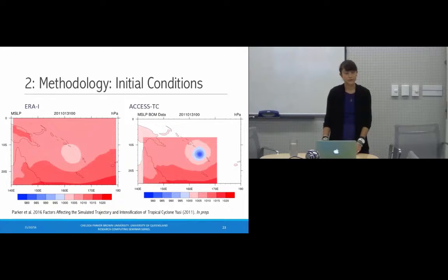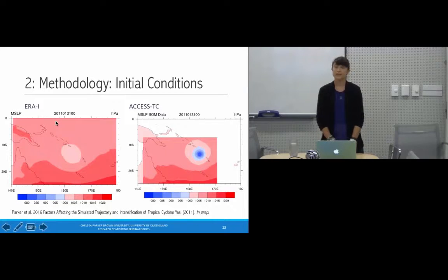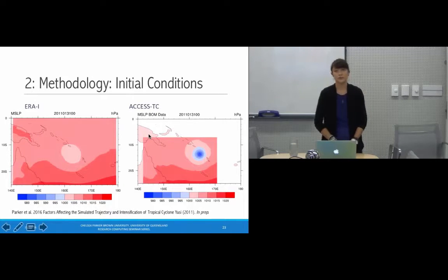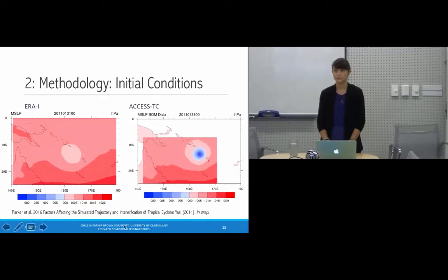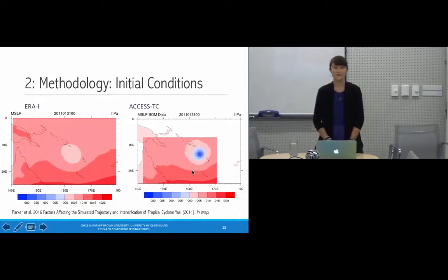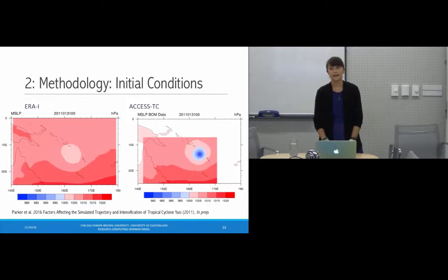Here's an illustration of the difference between those two data sets: minimum sea level pressure for both at the initialization time of Tropical Cyclone Yasi. Red colors are higher pressure and blue are lower. You can clearly see much more well-defined blue colors in the ACCESS-TC data — its resolution captures the structure and intensity of the tropical cyclone, which is largely missing from ERA-Interim. Using this initialization technique essentially seeds an accurate tropical cyclone vortex representing the case study into the simulation.